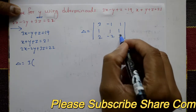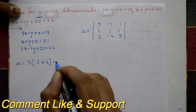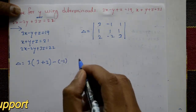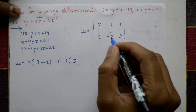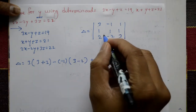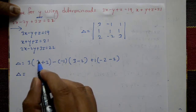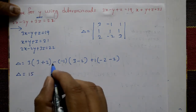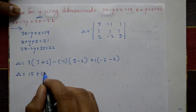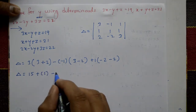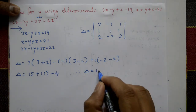Expand the determinant. 3 multiplied by (3 minus (-2) into 1), which simplifies. The sign pattern is plus, minus, plus. 1 into 3 is 3, 2 into 1 gives terms accordingly, plus 1 multiplied by (-2 minus 2). Delta equals 15 plus 1 minus 4, giving 16 minus 4 equals 12. Delta is 12.